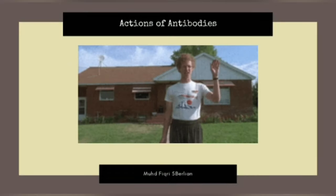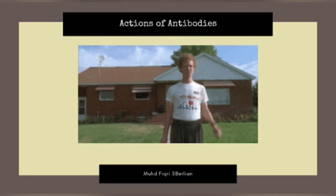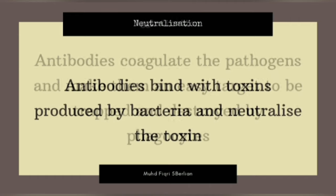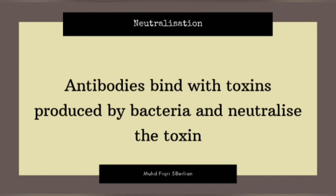Today I will be telling you about subtopic 11.2, actions of antibodies. First, we have agglutination, in which antibodies coagulate the pathogens and make them an easy target to be trapped and destroyed by phagocytes. The second one is neutralization, in which the antibodies bind with toxins produced by bacteria and neutralize the toxin.